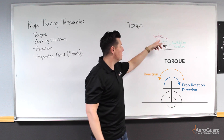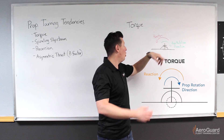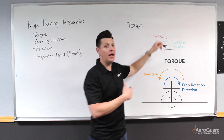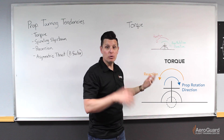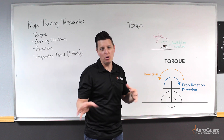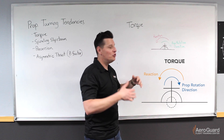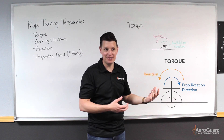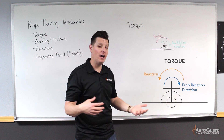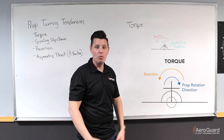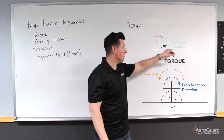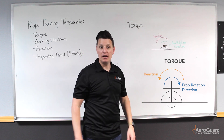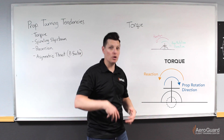That equal and opposite reactionary force is what we call a torque reaction. Usually smaller training aircraft don't possess the amount of power to really feel a lot of the effects of this force. But if you were flying an airplane with relatively higher power capabilities, then you might experience this roll to the left in conditions where you were at maximum power.